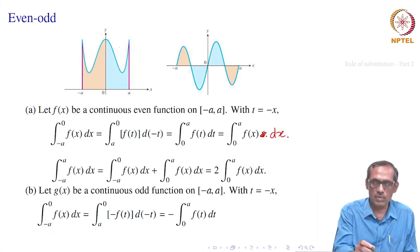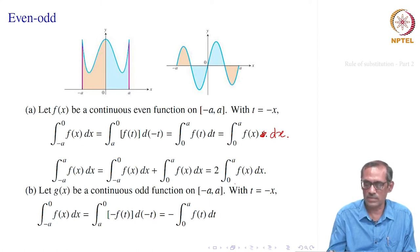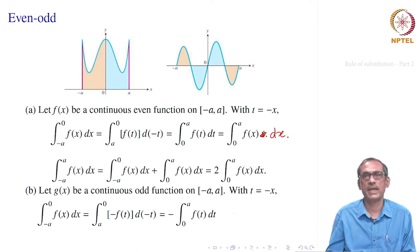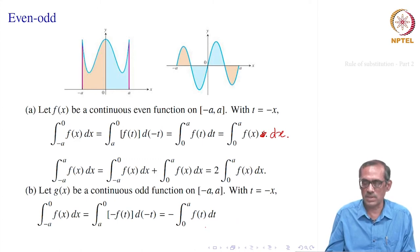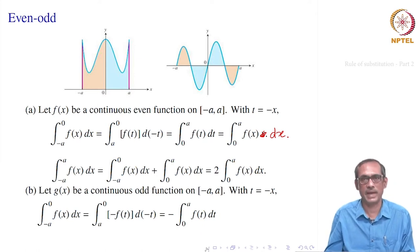Therefore, the integral from −a to a equals the integral from −a to 0 of f(x) plus the integral from 0 to a of f(x), which is now equal to twice the integral from 0 to a of f(x)dx. Sometimes this is easier because we evaluate at 0 and a instead of evaluating at −a.